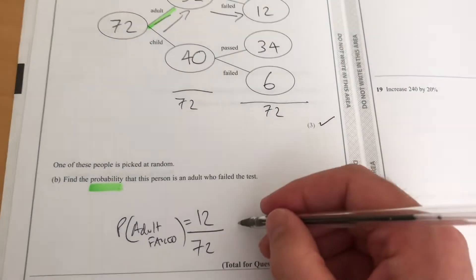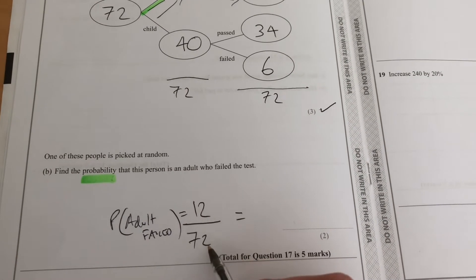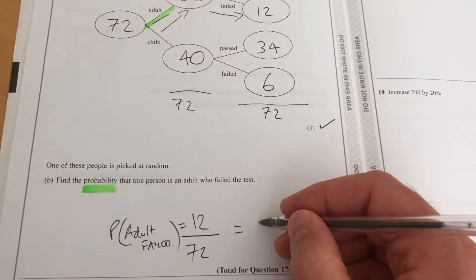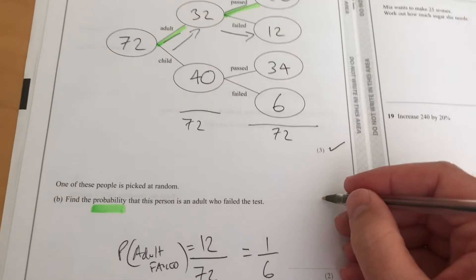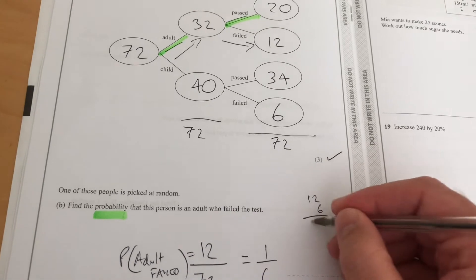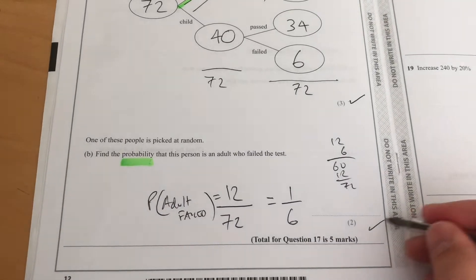12 out of 72. They haven't asked us to simplify that, but we could, because if I remember correctly, 12 goes into 72 six times. It's one-sixth, because six times 12 is 60 and 12—yeah, 72.